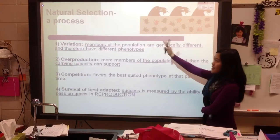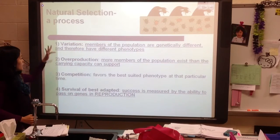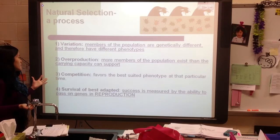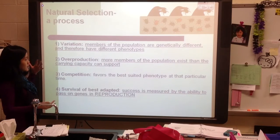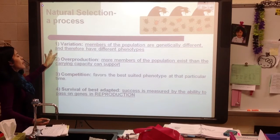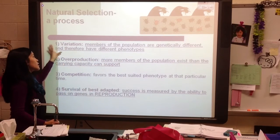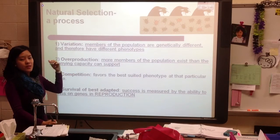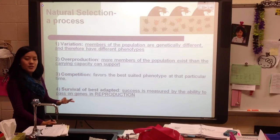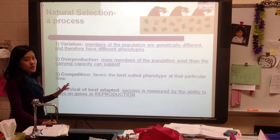Natural selection is a process, so you'll want to write that down. Here are the four steps. The first is variation, meaning that the members of the population are genetically different — they have different traits, different alleles, and therefore different phenotypes. When thinking about variation, consider how this relates to unit 3: the DNA, protein synthesis, genetics, and Punnett squares.